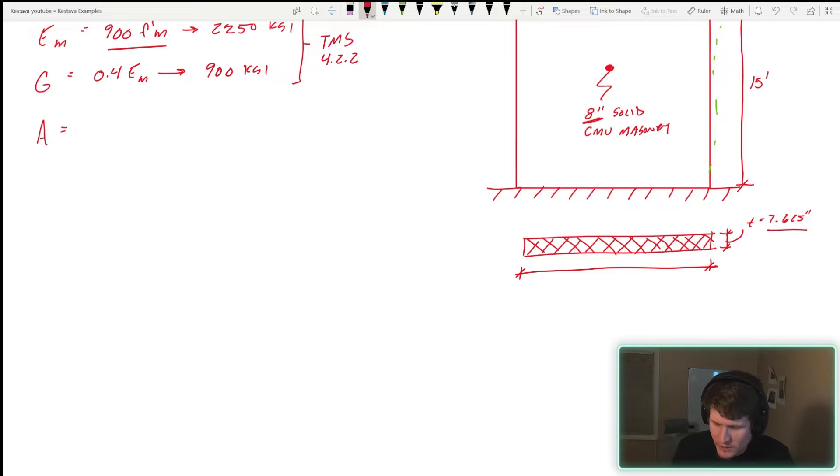I've seen people use 7.63 a lot of times. I use 7.625. The wall is 18 feet long. We're going to convert that to inches: 216 inches. Area is just those two multiplied together.